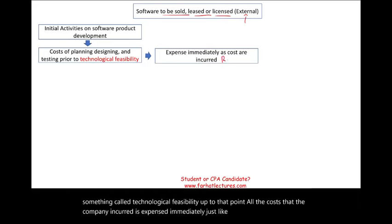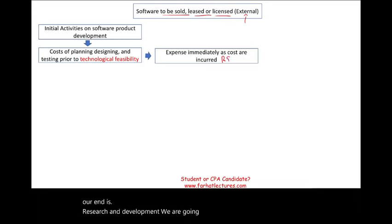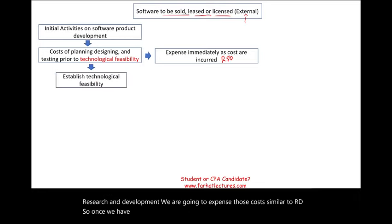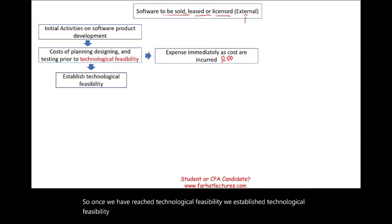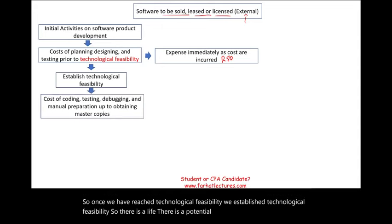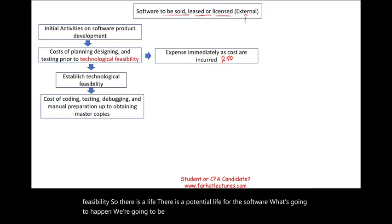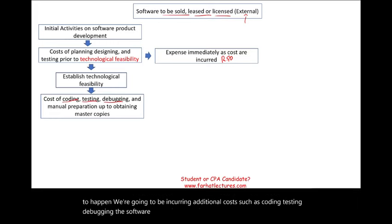If you know what R&D is — research and development — we are going to expense those costs similar to R&D. So once we have reached and established technological feasibility, there is a potential life for this software. We're going to be incurring additional costs, such as coding, testing, debugging the software, manual preparation, up to obtaining master copies.